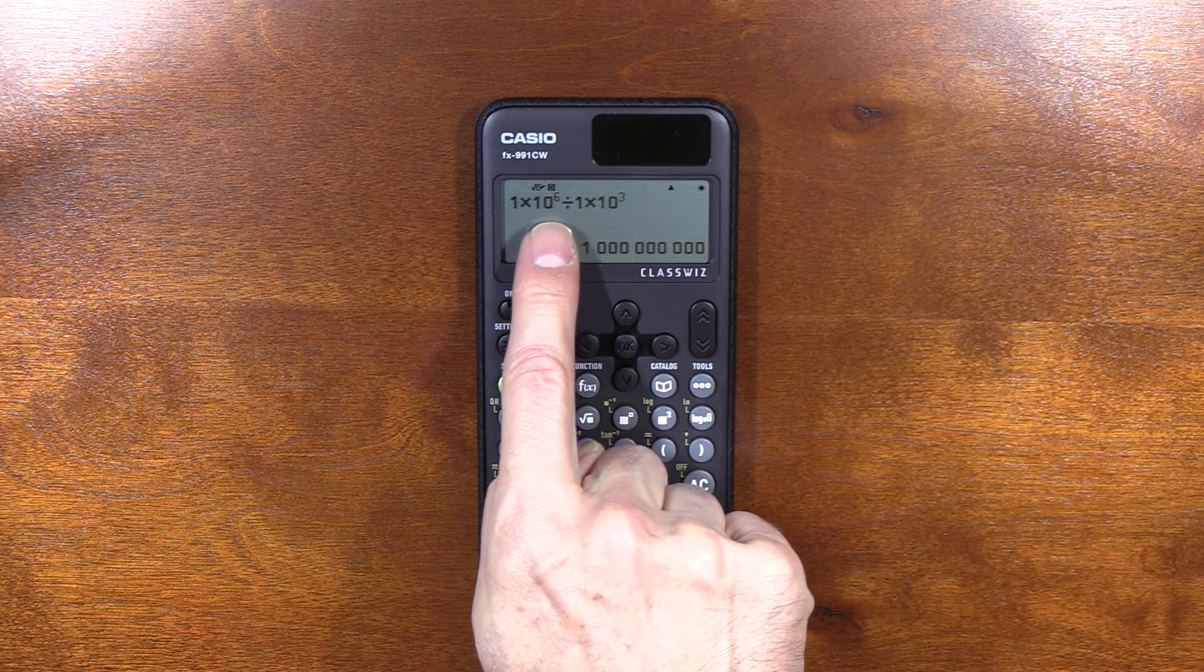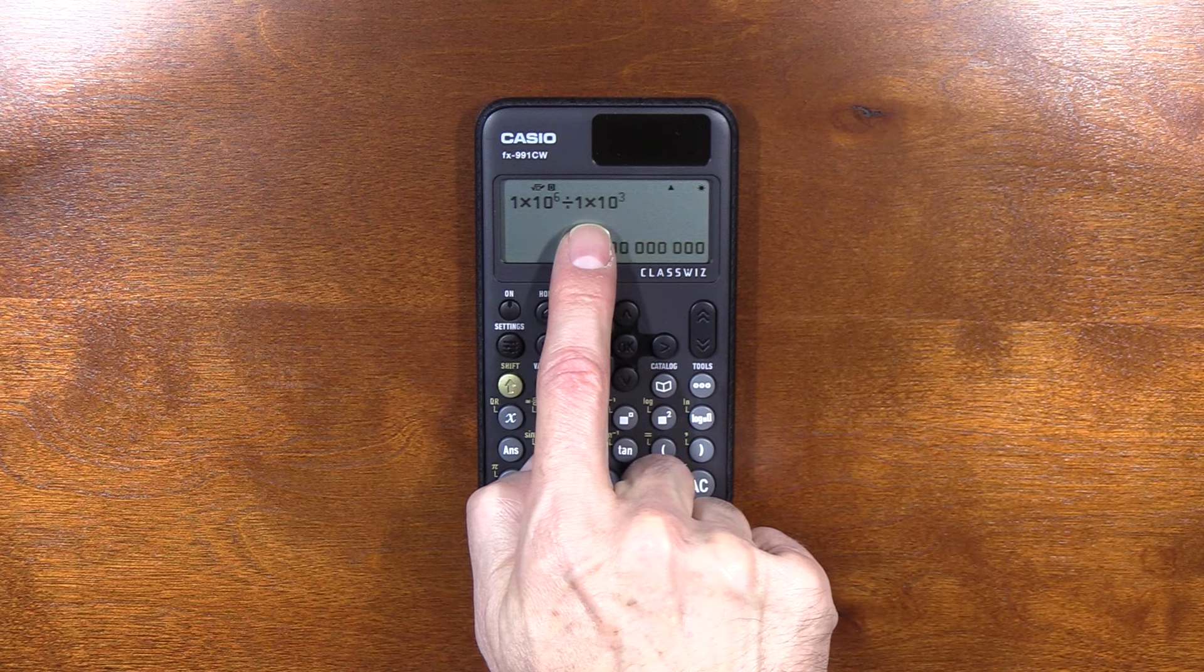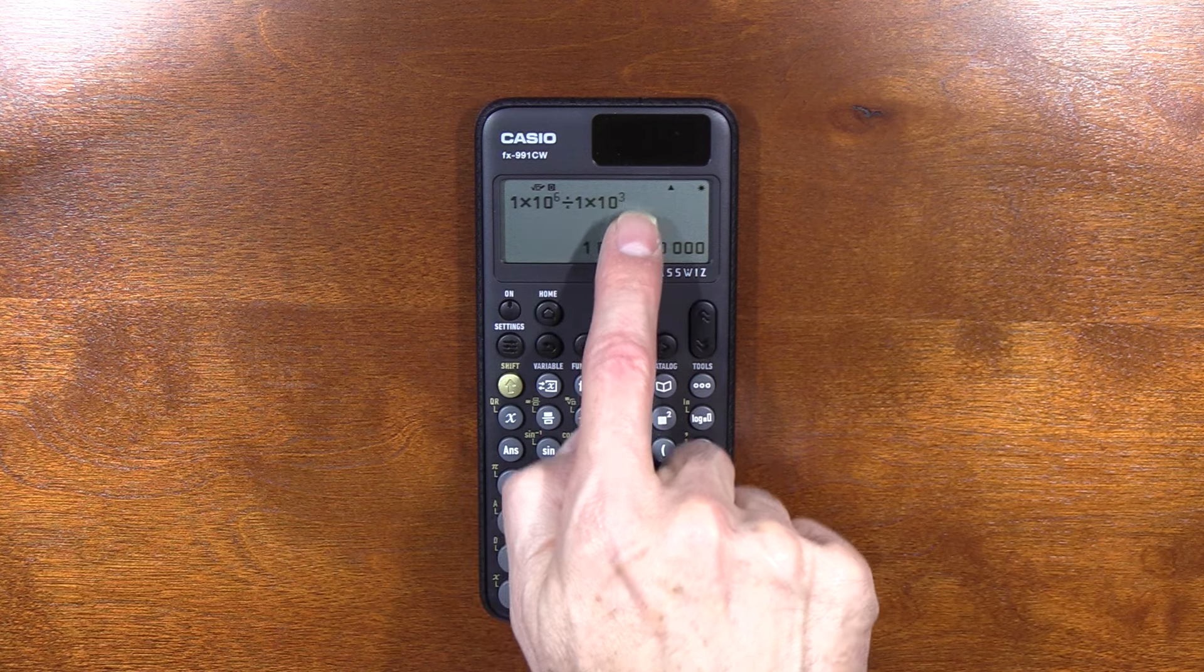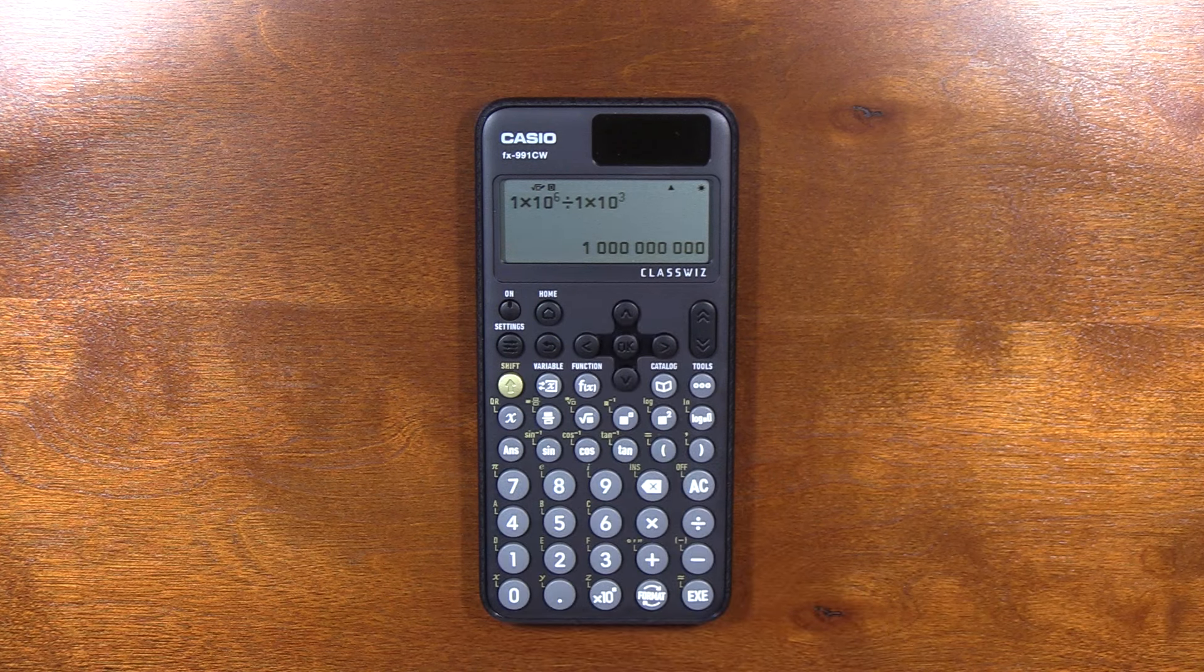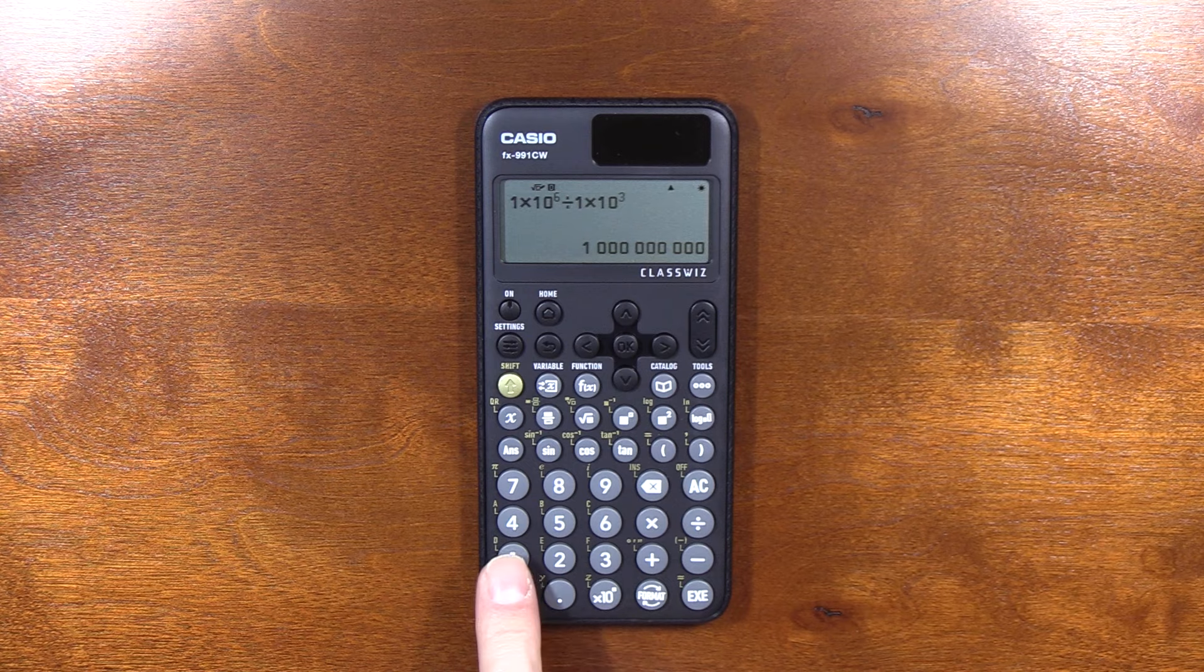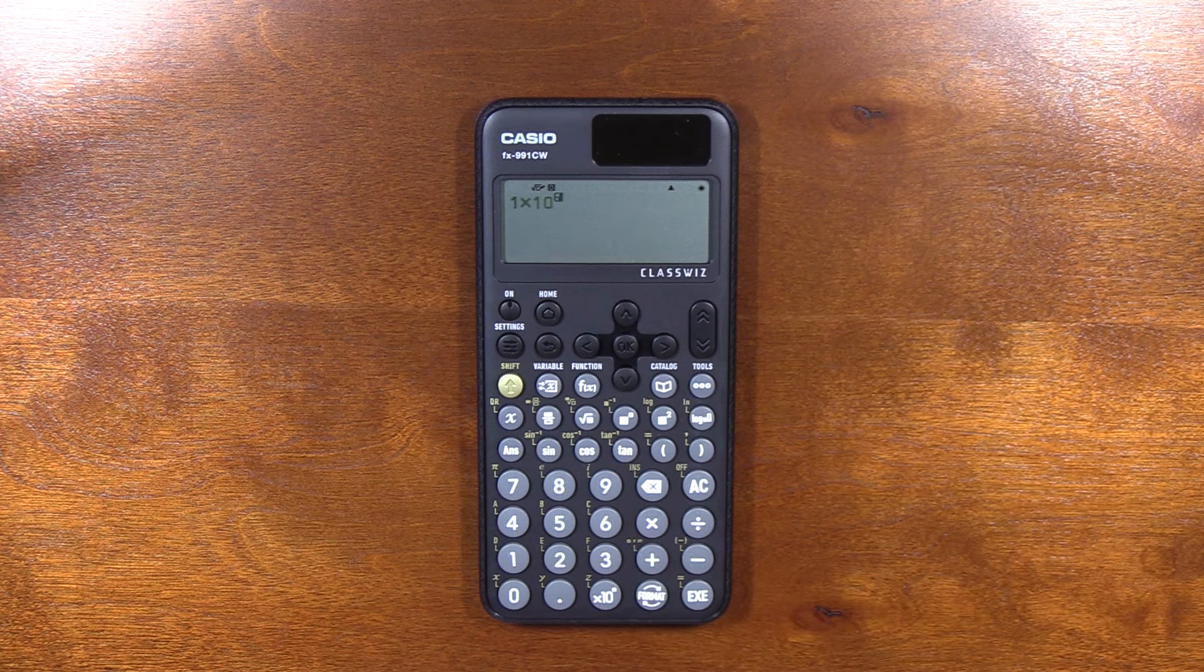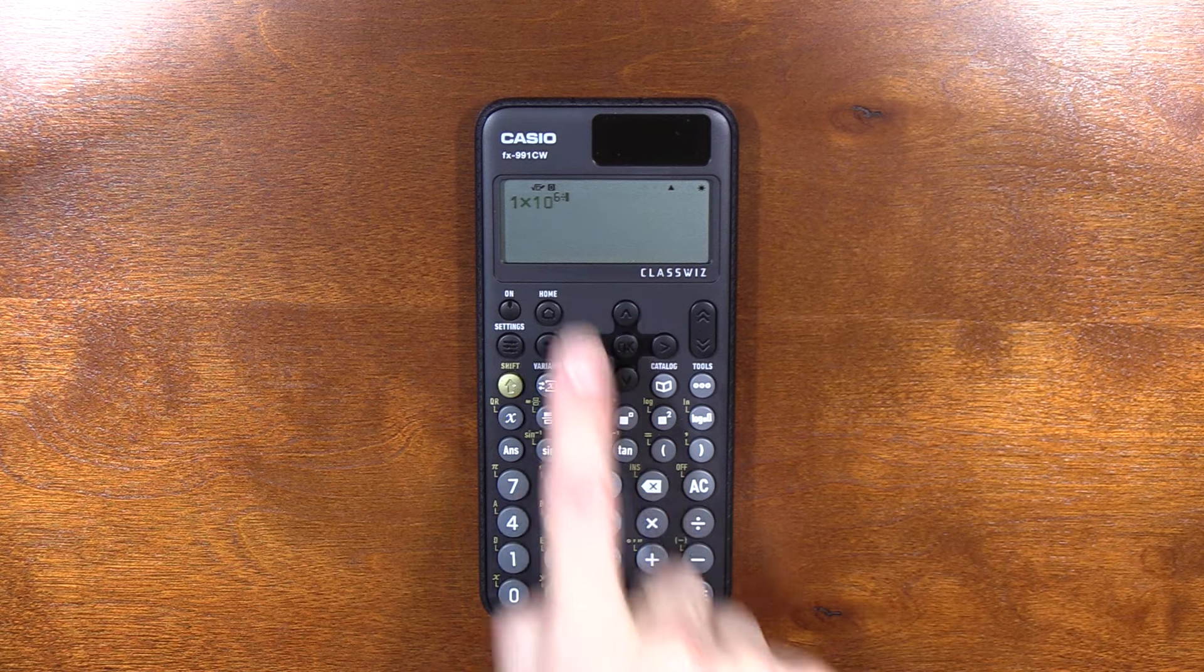So what's going on is the calculator is doing one times ten to the sixth. So it's doing one times a million. Then it's dividing by one. It's just doing order of operations. A million divided by one is still a million. Then it's multiplying a million times ten to the third power, which is a thousand. So it's doing one million times one thousand, and it's correctly telling you one billion. The problem is it's very confusing because when you use this key, there's an understanding that you're in scientific notation. You're not just multiplying, you're not just doing times ten to the sixth power, right? But on this calculator, that's what you're doing. That's why when you hit divide, it's still up there.